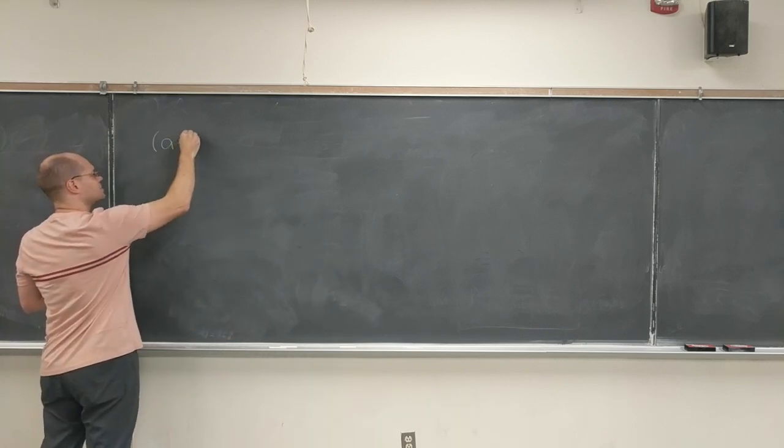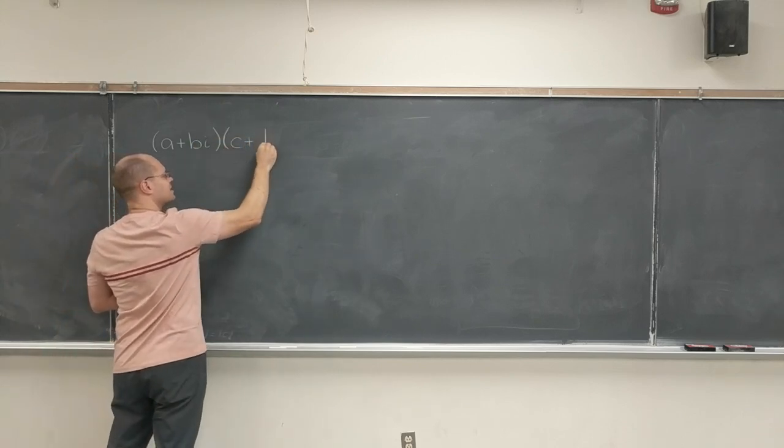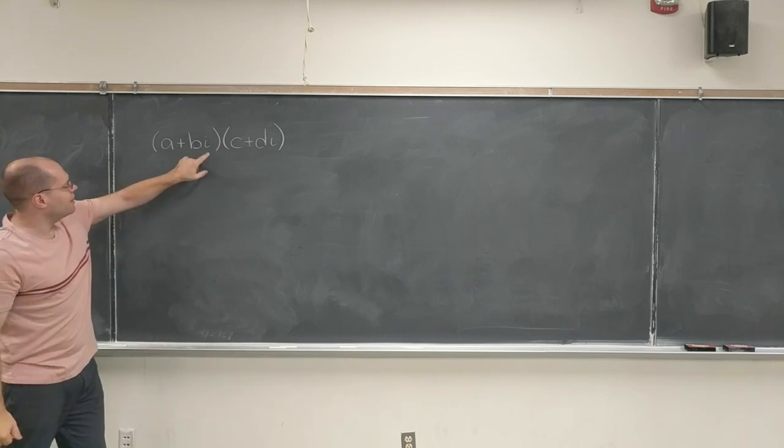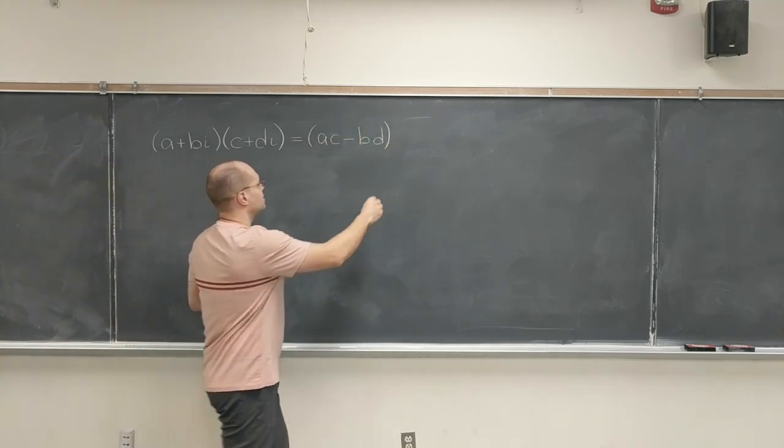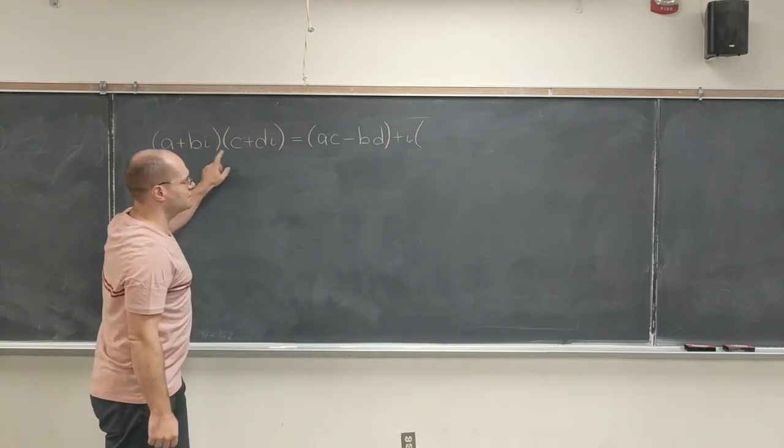When we take a plus bi and multiply it by c plus di, we end up with the real part, ac minus bd, plus i, now we do need parentheses, ad plus bc.